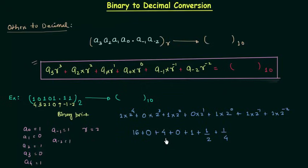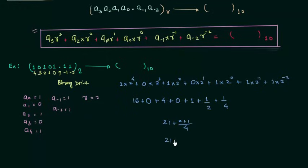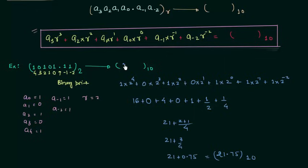Now we can easily add this. 16 plus 4 is 20, plus 1 is 21. Then 21 plus 1/2 plus 1/4. We can simplify 1/2 plus 1/4 as 3/4, and 3/4 is 0.75. So 21 plus 0.75 equals 21.75. This is the decimal equivalent of the binary number 10101.11. This is how you find the decimal equivalent of a binary number.